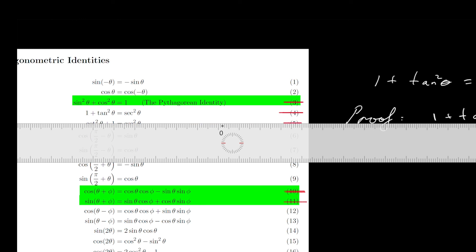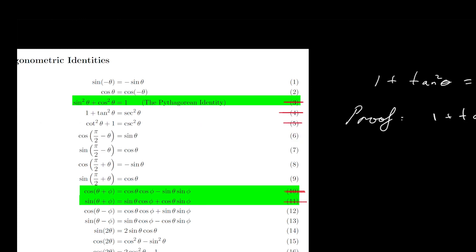That's two proofs for trigonometric identity number 5, which means we can go back to our list and cross it out. In total, we have proven five identities, which means there are 14 to go. Just to make things clear, it is these two identities that are instances of the Pythagorean identity in disguise. When you divide through, all you're really doing is scaling a triangle that satisfies these properties.